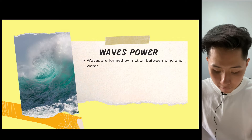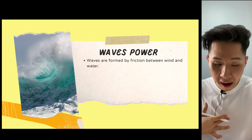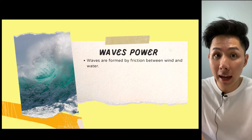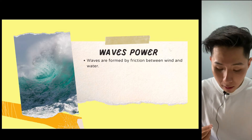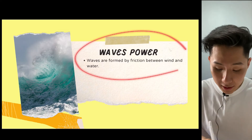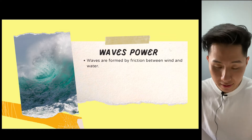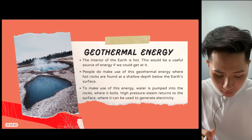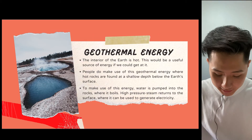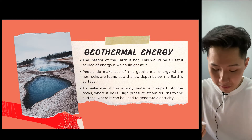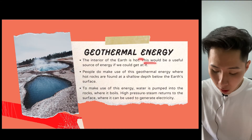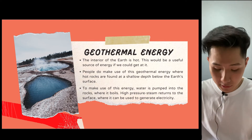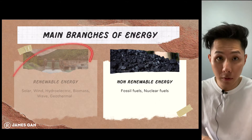Wave power: waves are formed by friction between wind and water. When wind disturbs the water surface, it creates waves that carry kinetic energy, which can be converted into power. Wave power is also contributed by the sun — without the sun there wouldn't be wind, and therefore no waves. The advantage is that it's renewable; the disadvantage is that the height of waves can vary. Finally, geothermal energy comes from the interior of the Earth. Because the interior is hot, energy can be extracted, usually from shallow depths of the Earth's surface.